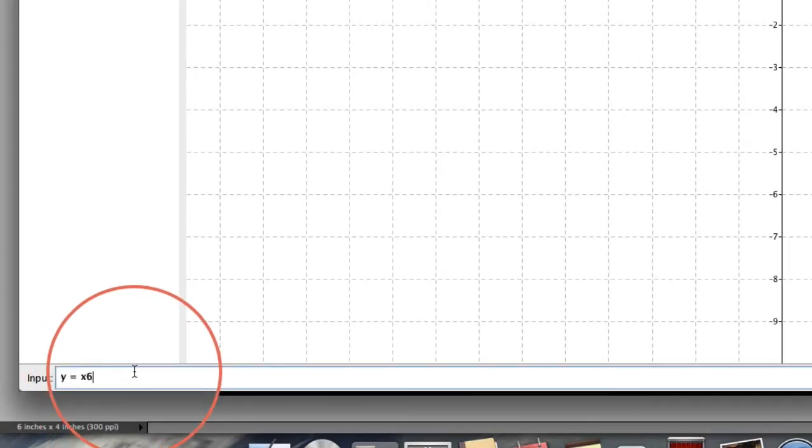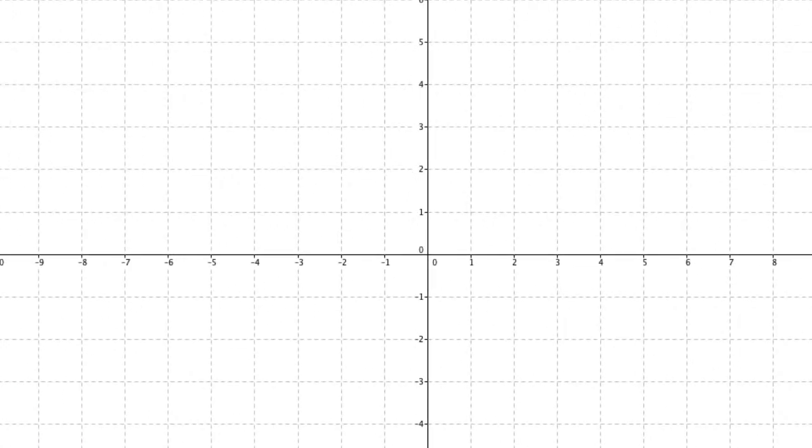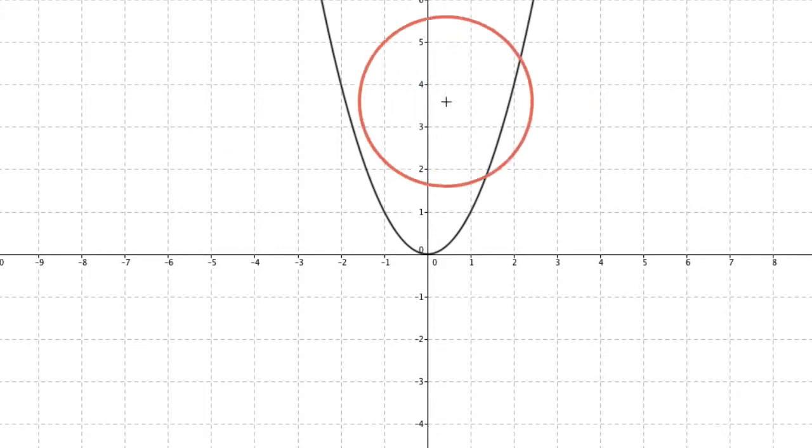Now, keep in mind, when you type this in, you have to use this caret symbol, so that would be above your 6 there. You have to shift 6. Y equals x squared, go ahead and hit enter, and notice that we have our squaring function right here.